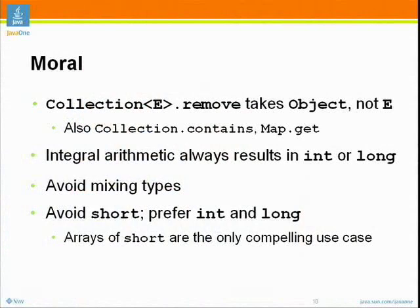What can we learn from this one? First, there are a number of methods in the collection classes that, even when you supply generic types, take Objects as parameters — you have to watch for these. The remove method takes Object, Map.get and so forth. You just have to be careful about that. Integral arithmetic: any math operation involving any integer value results in always an int or a long, never a byte, a short, or a char. Byte, short, and char are inferior types — once you operate on them, they always turn into ints. Avoid mixing types like ints and shorts — that can bite you in a number of ways.